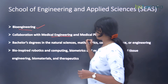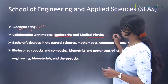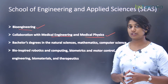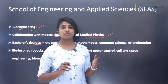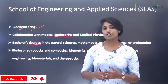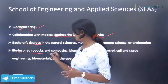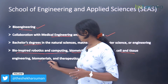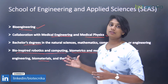SEAS does collaboration with medical engineering as well as medical physics fields within Harvard. The requirement to apply for PhD here is a bachelor's degree in the natural sciences, mathematics, computer science, or engineering. The different types of research in life sciences under this school include bio-inspired robotics and computing, biometrics and motor control, cell and tissue engineering, and biomaterials and therapeutics.